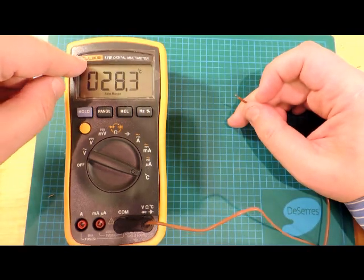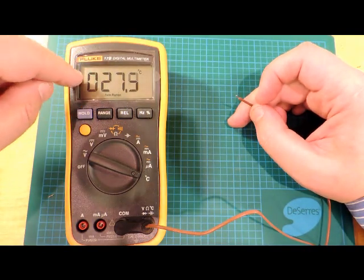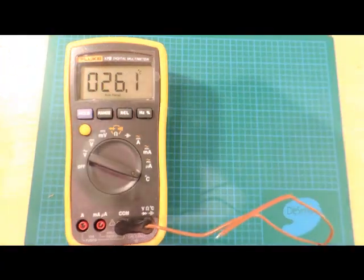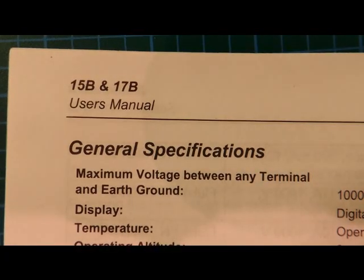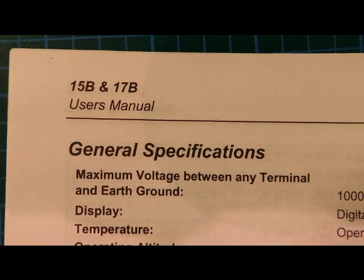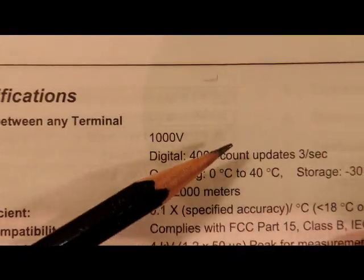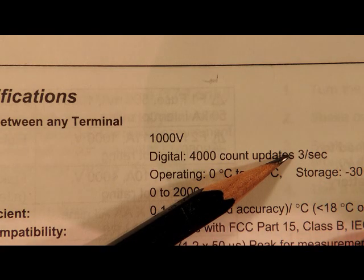The other factor is the meter itself. Looking at the manual specs, we can see how often it does a reading and updates the display. The manual applies to the 15B as well; they're part of a family. It updates the display three times per second.